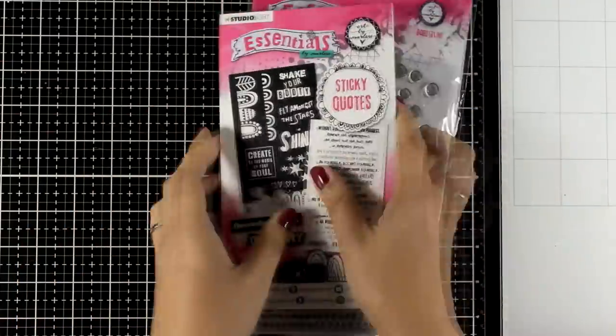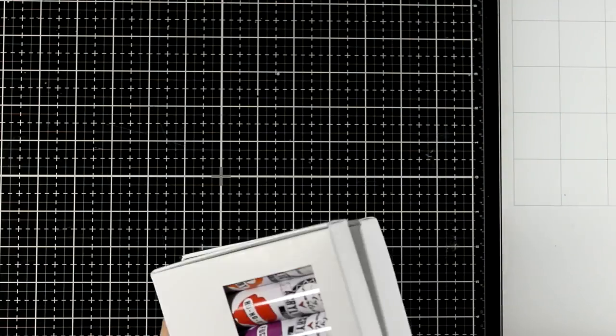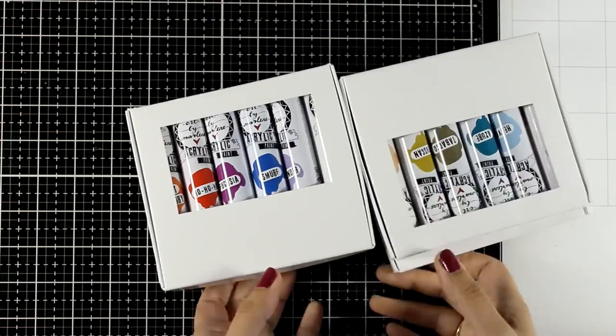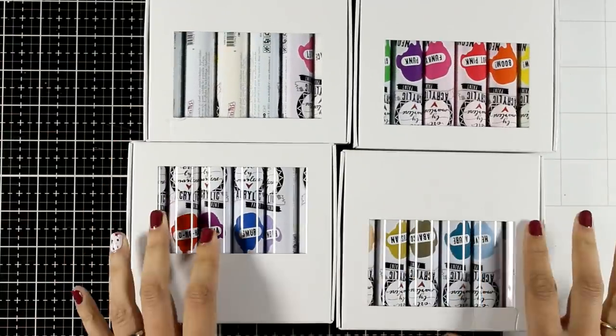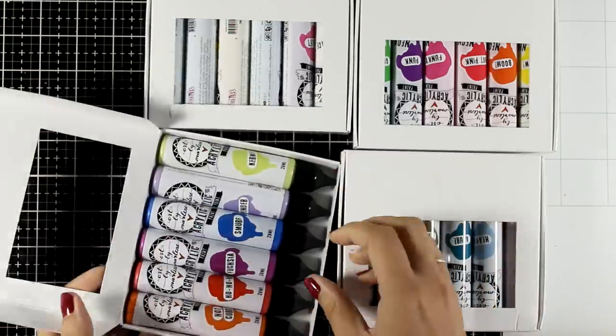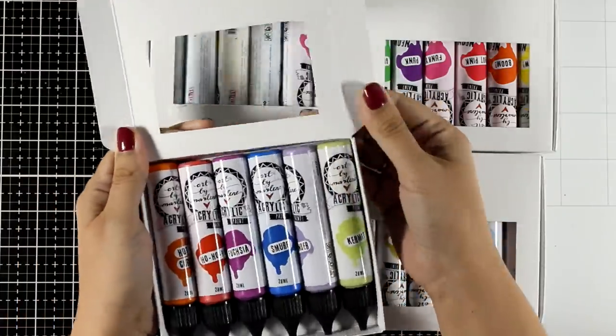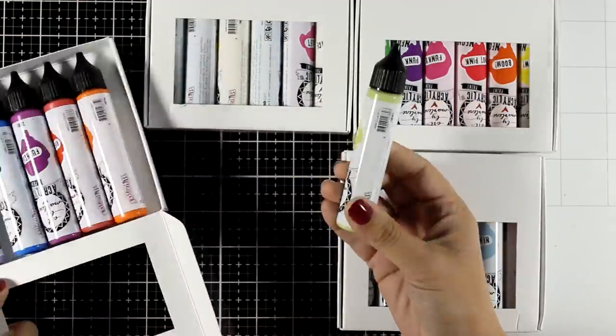But if you find them out of stock, you know for sure that they are going to restock. But my most favorite products that Marlene came up with are the new acrylic paints. Lovely vibrant colors. There are 24 available at the moment and you can get them in sets of 6 or you can get them individually, just pick your favorite colors.